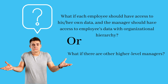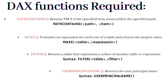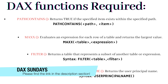So how are you going to handle these kinds of scenarios while creating your reports and dashboards and applying row-level security? Let's first discuss some of the DAX functions we are going to use in this video. The first is PATHCONTAINS, second is MAXX, third is FILTER, and last is USERPRINCIPALNAME. I have already created separate videos for all these DAX functions — I'll provide the links in the description section where you can check them out.